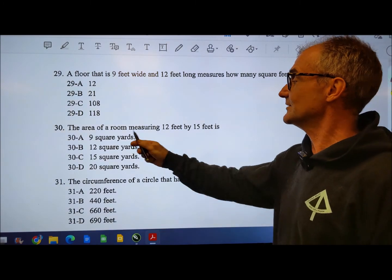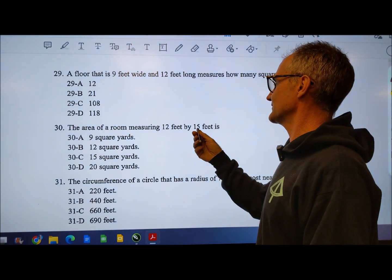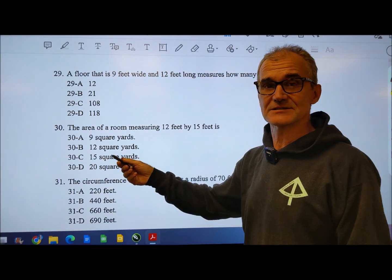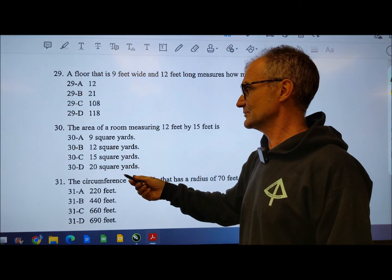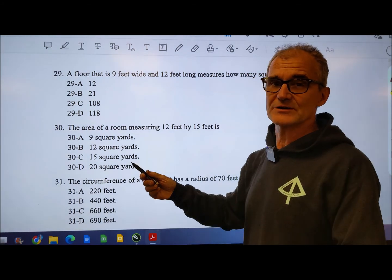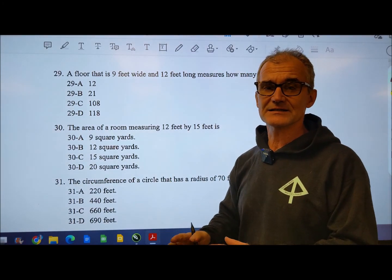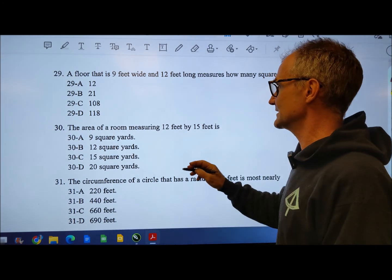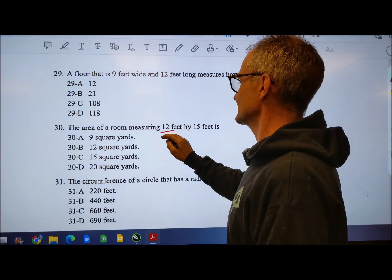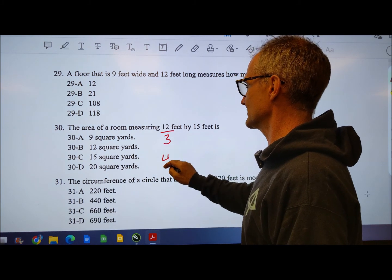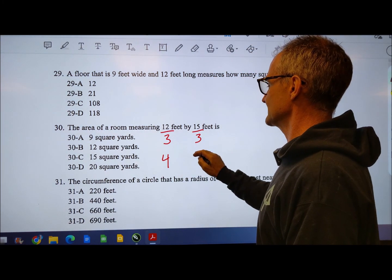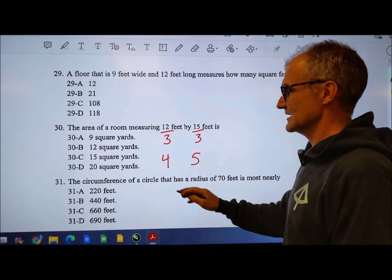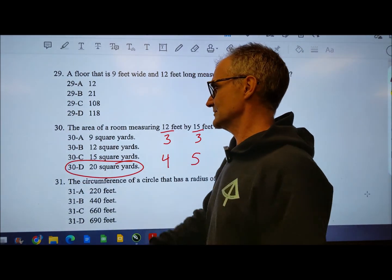Number 30, the area of a room measuring 12 feet by 15 feet. Very similar to this top one. But I look down at these answers and they're very different. It's all in square yards. So I could do 12 by 15 and divide that by nine because there's actually nine square feet in a square yard. Or an easier way to do it is just do 12 divided by three to get four yards. 15 divided by three to get five yards. And then four yards times five yards is going to give me 20 yards right here.